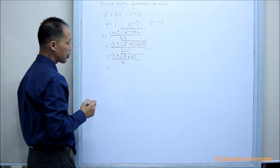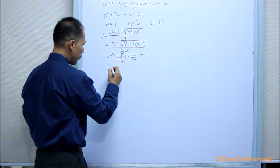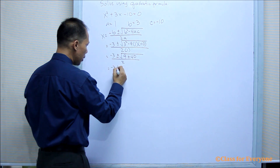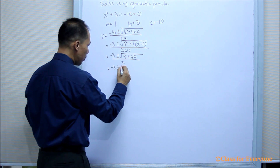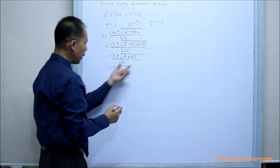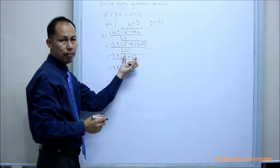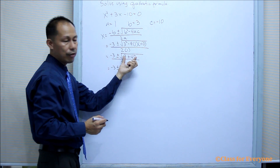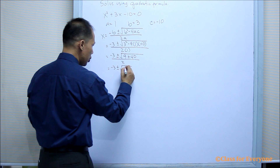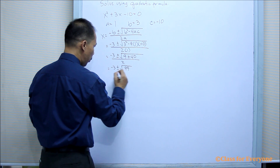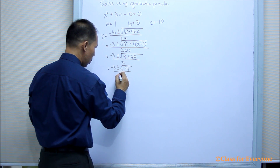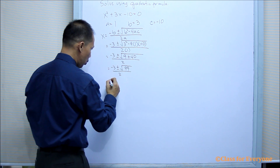Next, we have negative 3 plus or minus the square root. We can now get the sum under the radical, which is 49, all over 2.